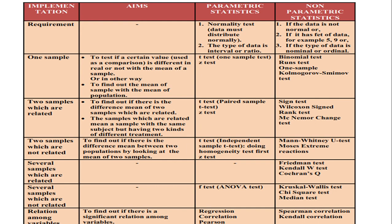For several unrelated samples, you can go to parametric statistics first — but don't forget to do the normality test first. If the data distribute normally, you can use the F-test, also called the ANOVA test. Unlike the independent sample t-test, in ANOVA you do not need to do a homogeneity test — only the normality test before running ANOVA. But if the normality test shows the data do not distribute normally, you must go to non-parametric statistics.